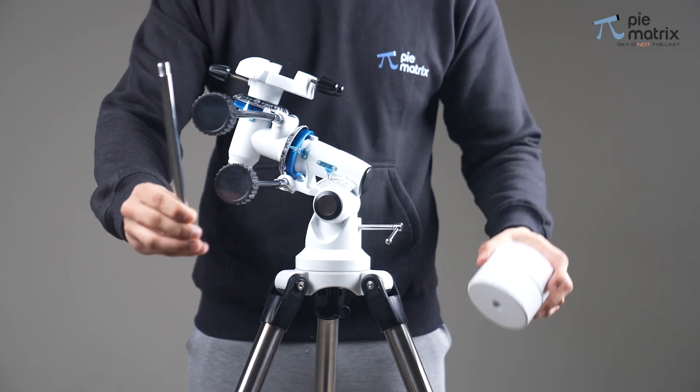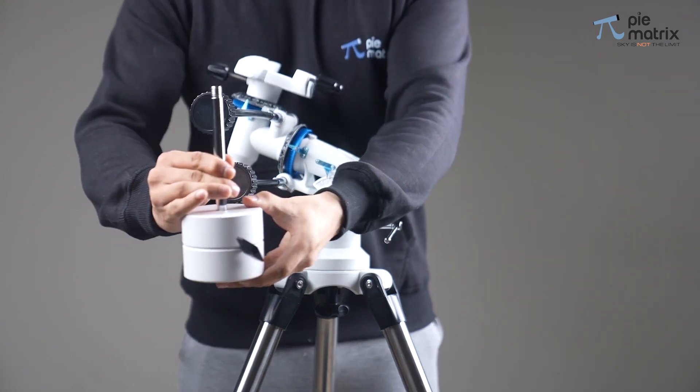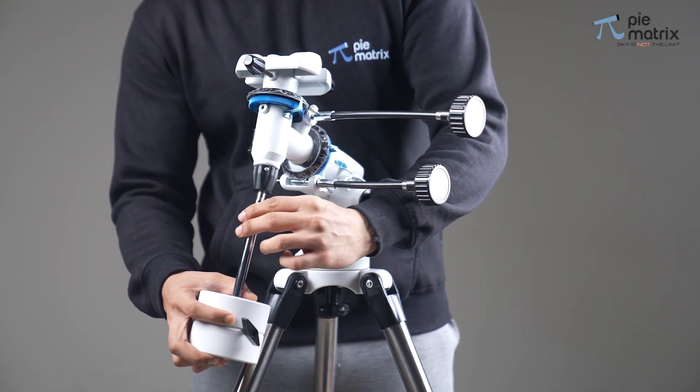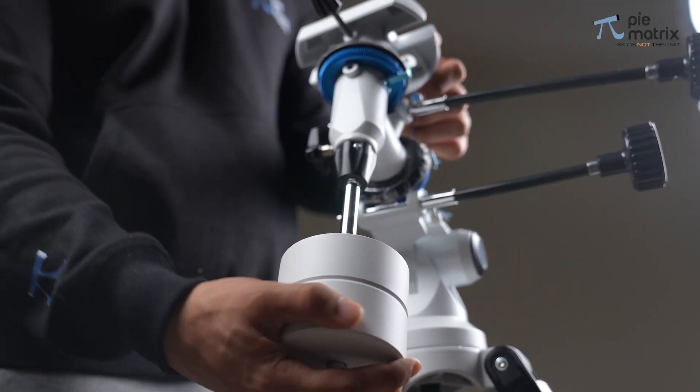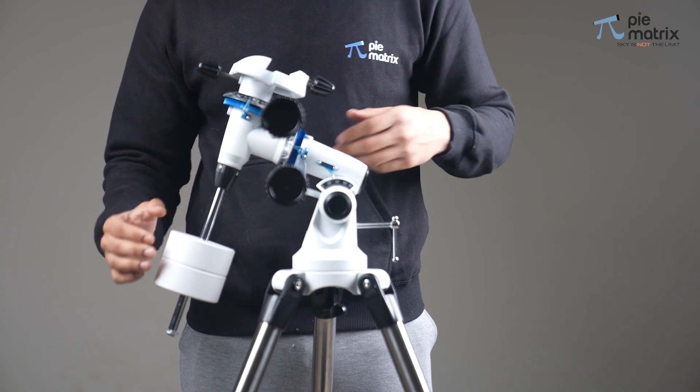Now take the counterweight rod and insert weights through it. Once it is done, place the rod from the open end inside the shaft hole. The tripod and EQ mount setup is done.